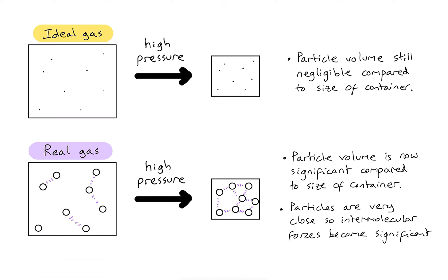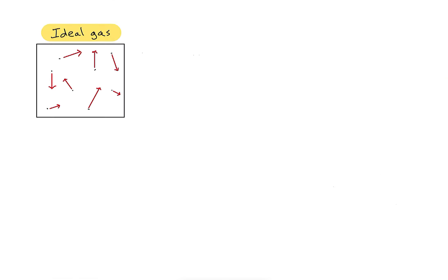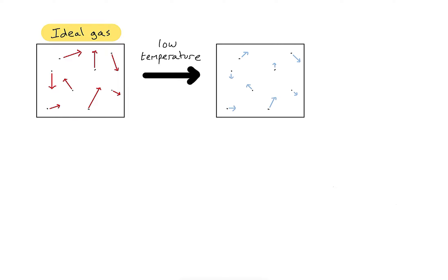What about if we decrease the temperature? Here's the ideal gas at some medium or high temperature, with arrows representing the kinetic energy of the particles. The arrows are all quite large because the average kinetic energy is high. If the box is cooled down to a lower temperature, the kinetic energy of those particles decreases, so the arrows become smaller, though there is still some variation between them.